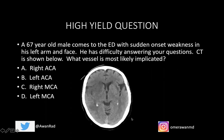I'll start with a high yield question. A 67-year-old male comes to the ED with sudden onset weakness in his left arm and face. He has difficulty answering your questions. The CT is shown below — what vessel is most likely implicated? Is it the right ACA, left ACA, right middle cerebral artery, or left middle cerebral artery? We'll come back to this question at the very end after we're done.